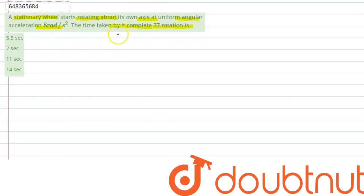So there is a stationary wheel which is rotating about its own axis and given is what? We are given angular acceleration alpha is 8 radians per second square.